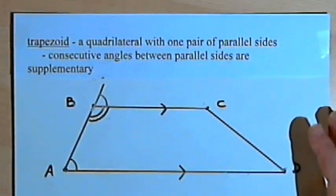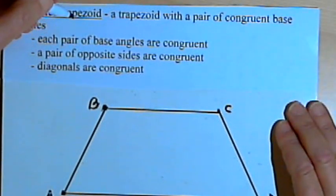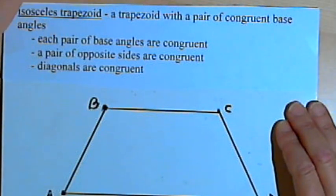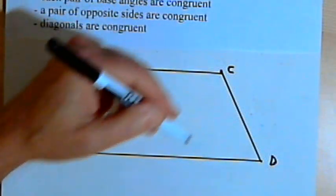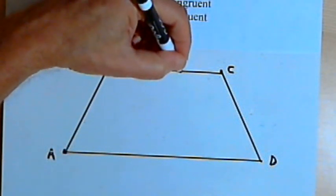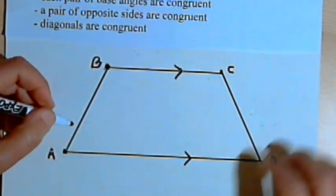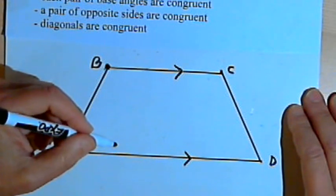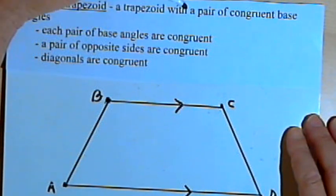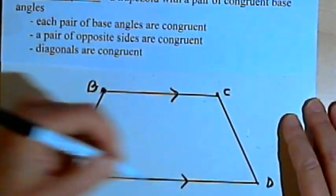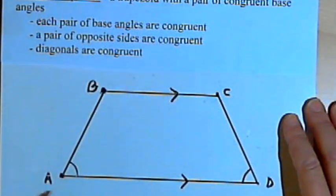Now we have a special kind of trapezoid — a specific kind — which is called an isosceles trapezoid. An isosceles trapezoid is a trapezoid with a pair of congruent base angles. I've got a trapezoid that I've drawn and I'll label the parallel sides BC and AD. When we talk about trapezoids, the parallel sides are very often called the bases. This definition says that there's a pair of congruent base angles, so angle A and angle D would be congruent base angles — they would have the same measure.